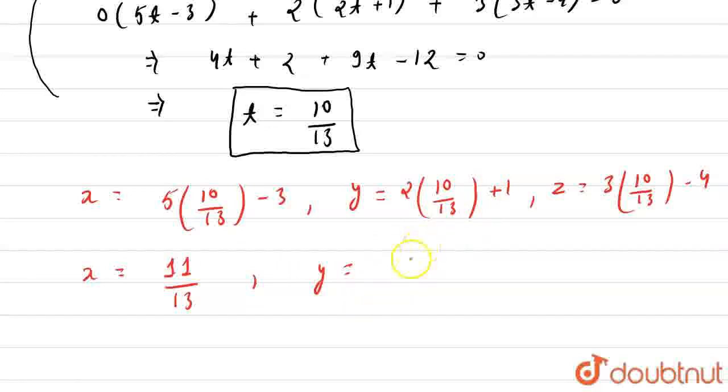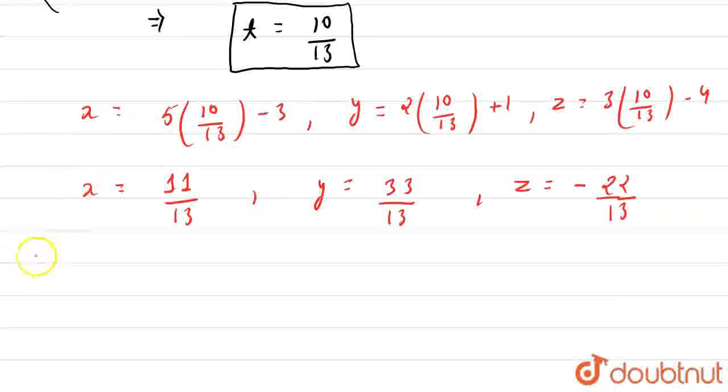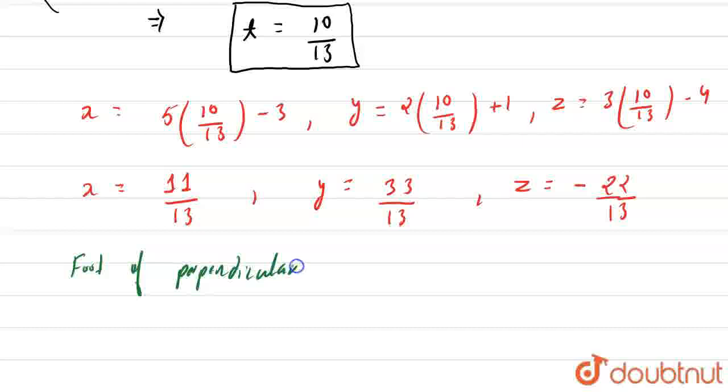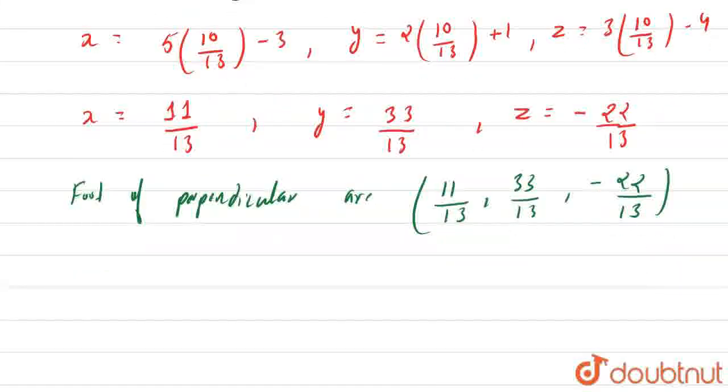So we get y = 33/13 and z = -22/13. So these are the foot of perpendicular of our equation. We can write foot of perpendicular as (11/13, 33/13, -22/13). Now we also have to find the second part which is the length of this perpendicular.